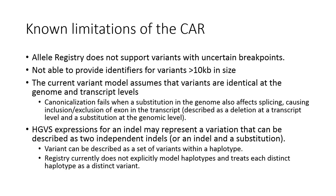When using the ClinGen Allele Registry, keep in mind the following limitations. The registry is not able to support variants with uncertain breakpoints, nor can it provide identifiers for variants larger than 10 KB in size, meaning it cannot currently accommodate most copy number variants, particularly those identified by chromosome microarray. The current variant model assumes that variants are identical at the genome and transcript levels, so difficulties may arise for substitutions that also affect splicing. Finally, HGVS expressions for indels may be described as two independent indels or an indel and a substitution — this type can be described as a haplotype set, but the registry does not explicitly model haplotypes and treats each as a distinct variant.